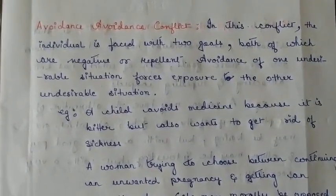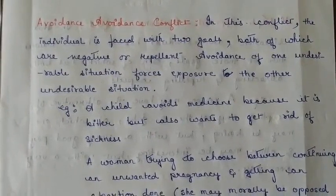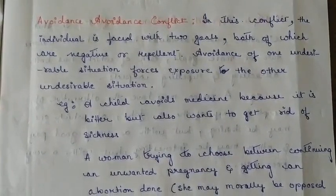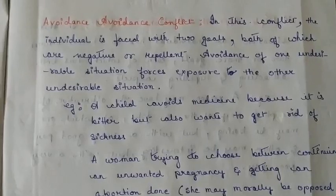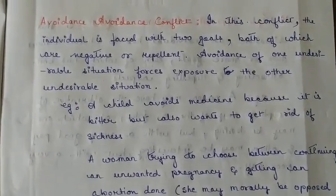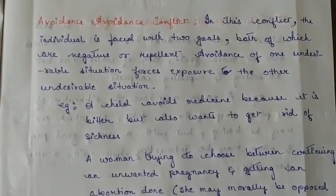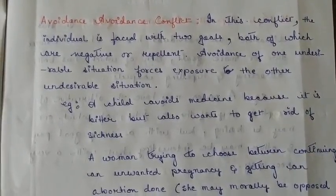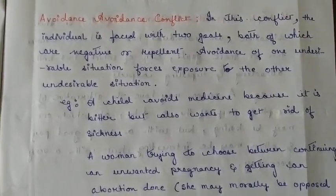The second type is avoidance-avoidance conflict, which occurs when a person has to choose between two undesirable goals. If he chooses one, he has to face another undesirable situation — which is quite a tough and confusing situation, as he must make a decision and give up the other, and both situations are undesirable.